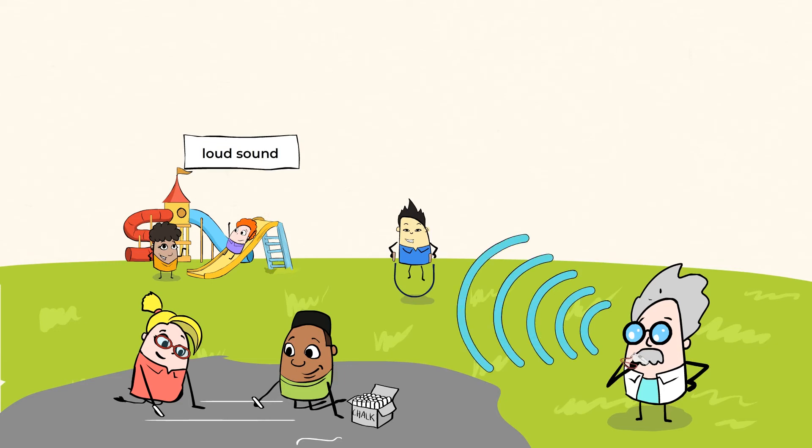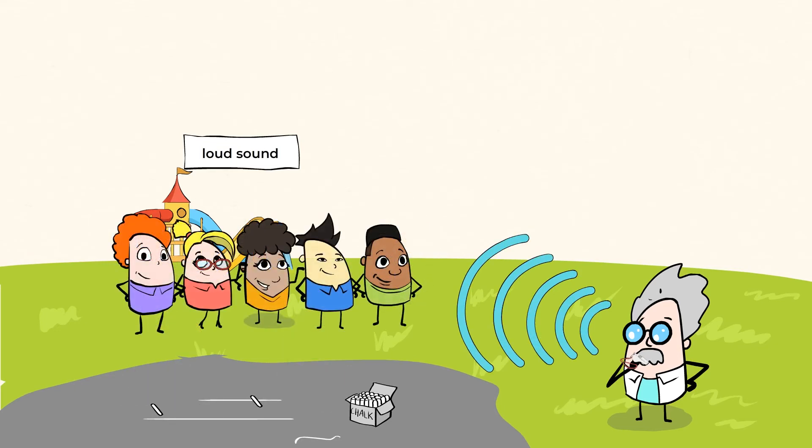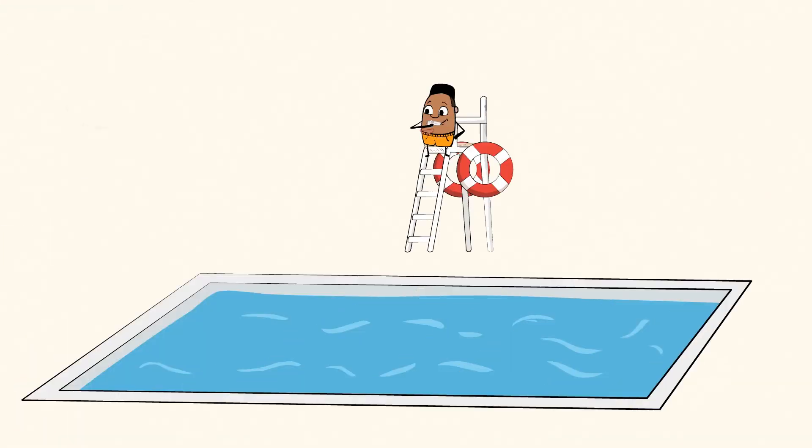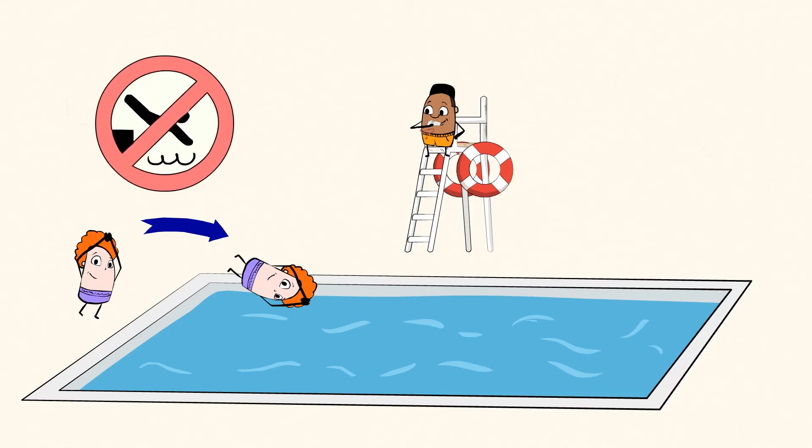The teacher can blow the whistle to get everyone's attention and signal that it's time to go in. Lifeguards at a pool use whistles to communicate with swimmers in a similar way. If a swimmer is not following the pool rules, they can blow their whistle to get their attention and let them know. They can also get the attention of other lifeguards using their whistle.